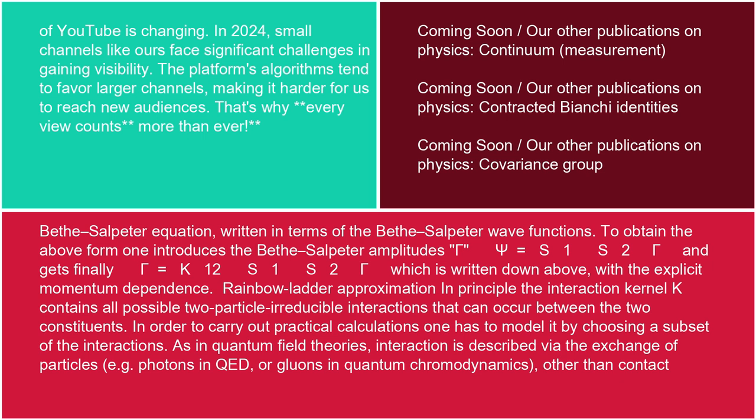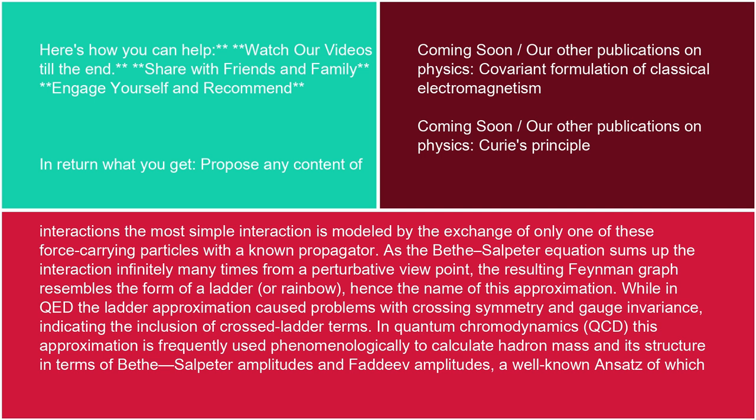Rainbow ladder approximation: in principle, the interaction kernel K contains all possible two-particle-irreducible interactions that can occur between the two constituents. In order to carry out practical calculations, one has to model it by choosing a subset of the interactions. As in quantum field theories, interactions are described via the exchange of particles — e.g. photons in QED, or gluons in quantum chromodynamics — the most simple interaction is modeled by the exchange of only one of these force-carrying particles with a known propagator. As the Bethe-Salpeter equation sums up the interaction infinitely many times from a perturbative viewpoint, the resulting Feynman graph resembles the form of a ladder or rainbow, hence the name of this approximation.